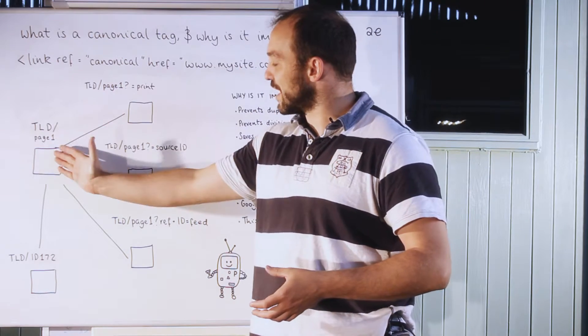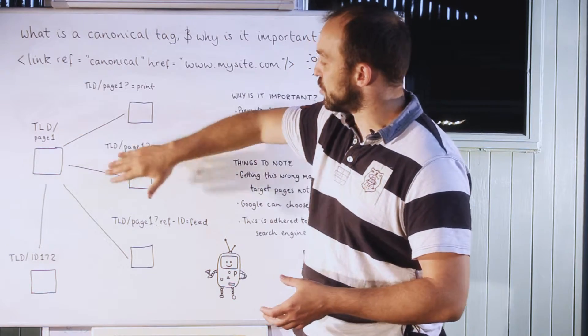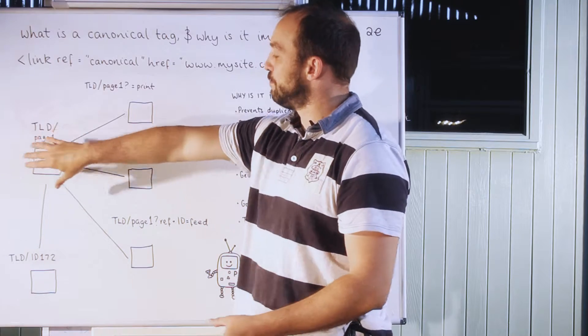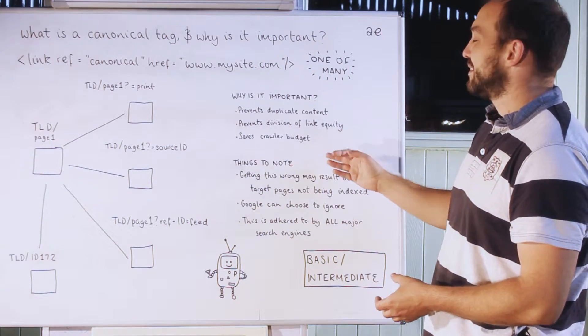And prevents division of link equity. So let's say this page gets one link and then this page gets one link, technically you've divided that link equity over two pages. What canonical tag does is it says drive all that link equity back to this section here.